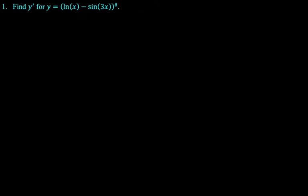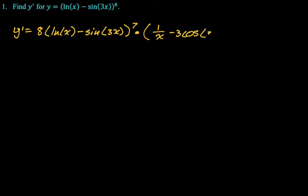This is very much a chain rule problem. We have something to the eighth, which means the derivative will be eight times that thing to the seventh. So that's what we're going to start with. Then we just need the derivative of that thing. So that thing is natural log of x. The derivative of natural log of x is one over x and then minus the derivative of sine of 3x is three cosine of 3x. And that's it. That's the whole problem.